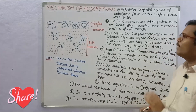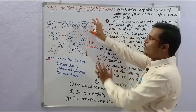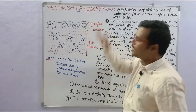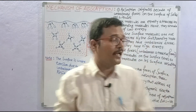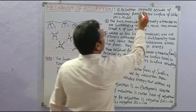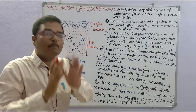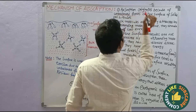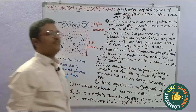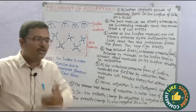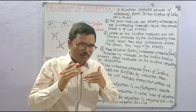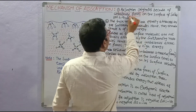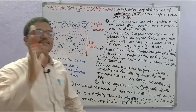Let me show the first point. In a liquid, there are molecules in the bulk as well as at the surface. Adsorption originates because of unbalanced forces on the surface of a solid or liquid. These unbalanced forces exist at the surface.